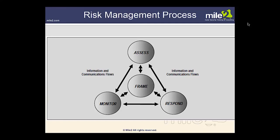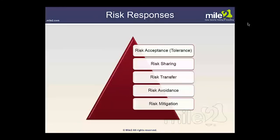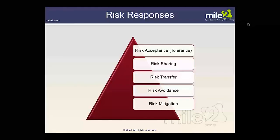Looking at risk responses: we could have risk acceptance (sometimes called tolerance), risk sharing, risk transfer, risk avoidance, and risk mitigation. Risk acceptance is appropriate when the identified risk is within organizational risk tolerance and cost-effective. Risk sharing or transfer is appropriate when the organization desires to shift risk liability and responsibility to other organizations. Risk avoidance is appropriate when identified risk exceeds organizational risk tolerance — we cease those activities. Risk mitigation, sometimes called risk reduction, is the appropriate response for portions of risk that cannot be accepted, avoided, shared, or transferred.